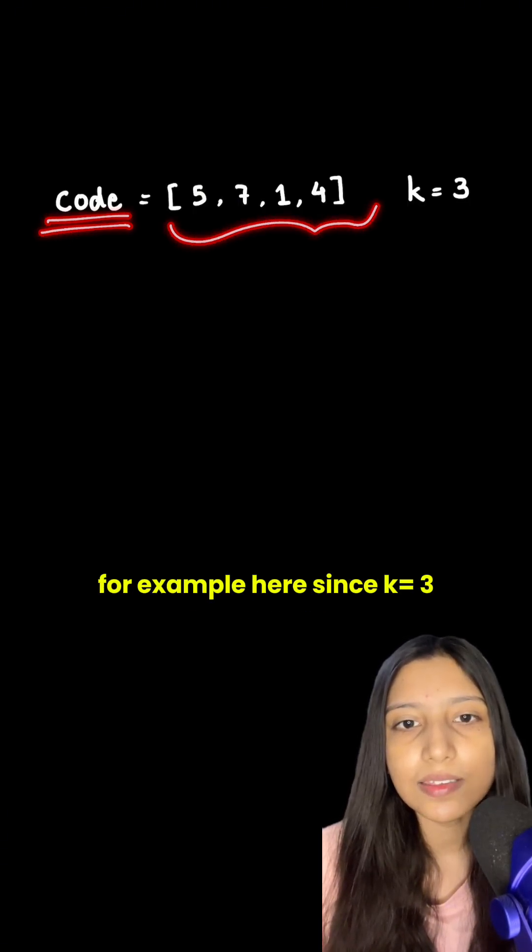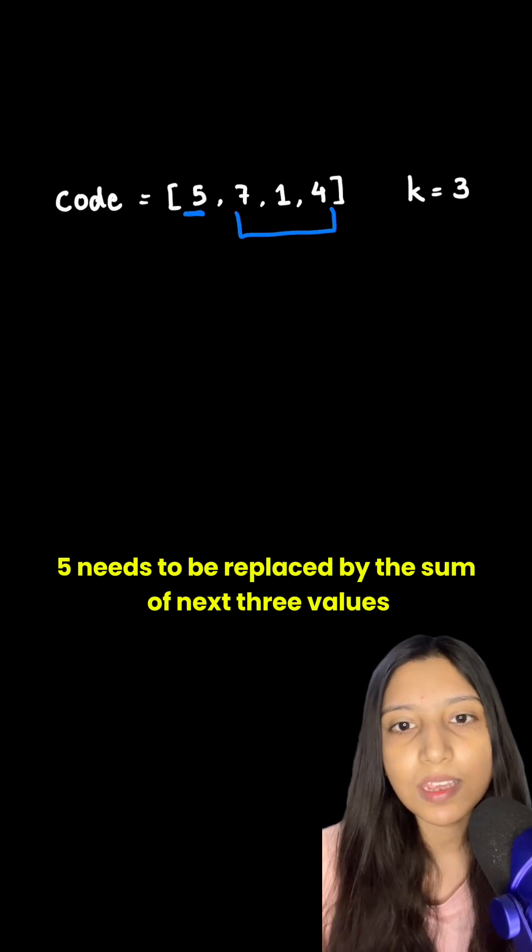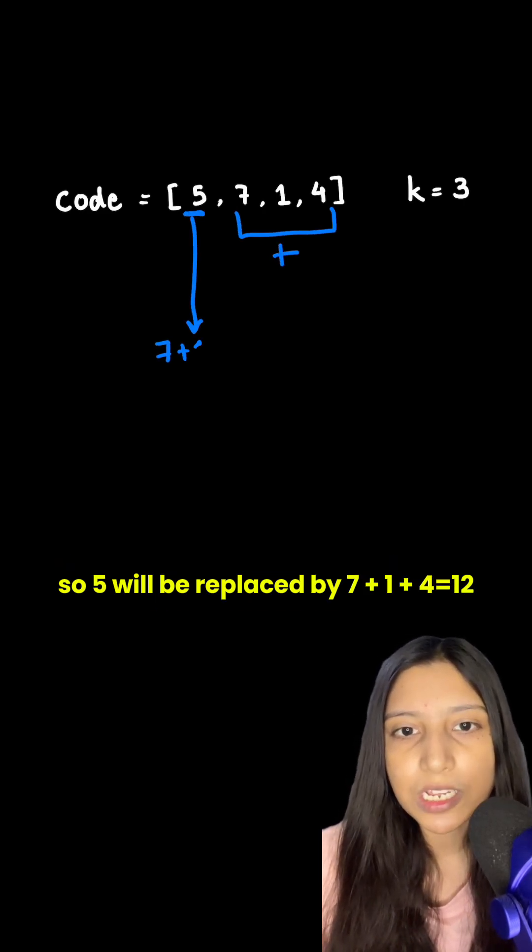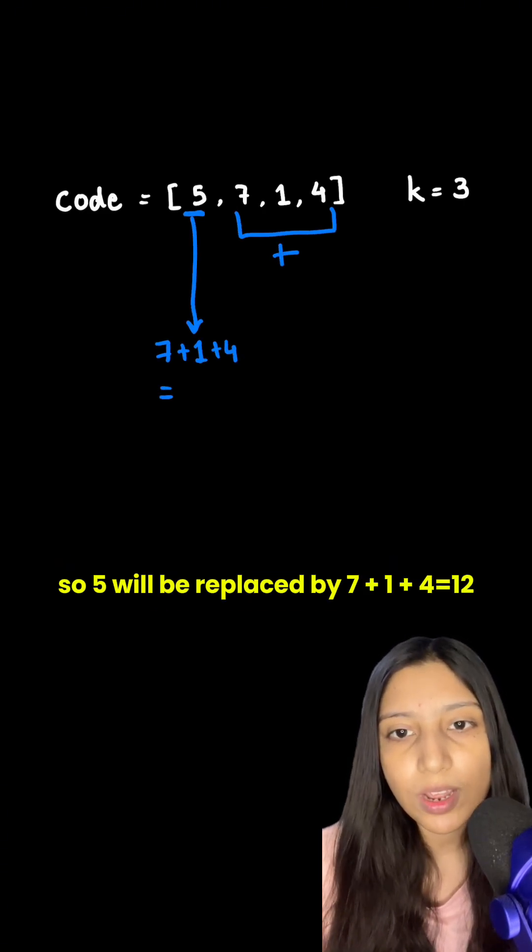For example, here, since k is 3, 5 needs to be replaced by the sum of next three values. So 5 will be replaced by 7 plus 1 plus 4 equals 12.